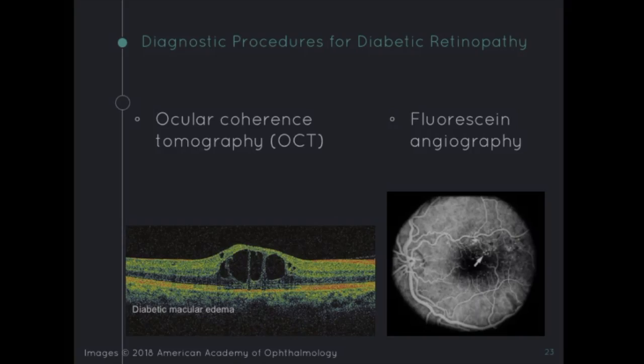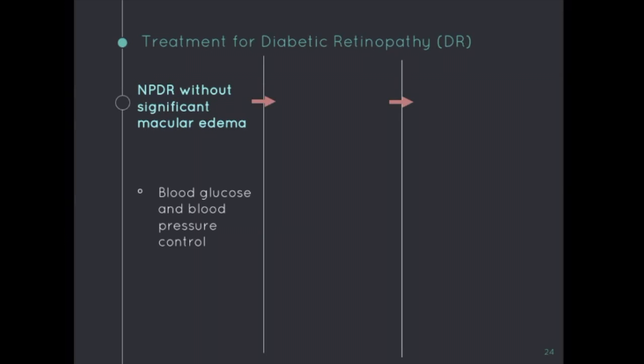The progression of non-proliferative DR can be delayed through rigorous blood glucose and blood pressure control with no direct intervention if macular edema is not significant. However, non-proliferative DR in combination with extensive macular edema can be treated with focal laser, intravitreal steroids, and anti-VEGF agents.